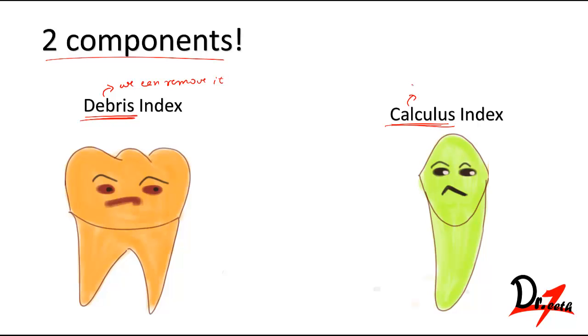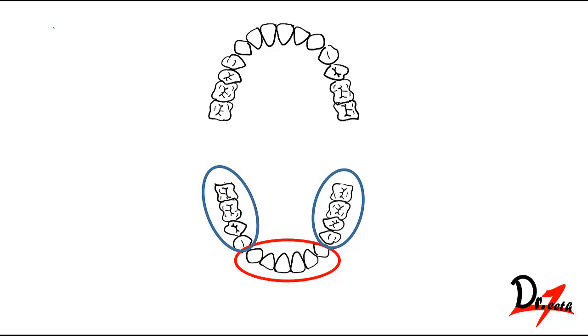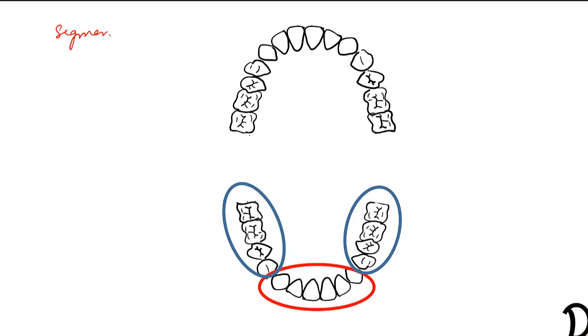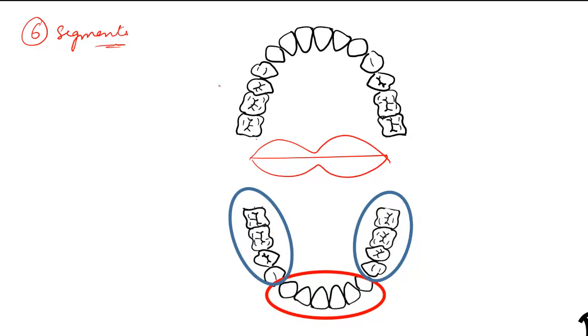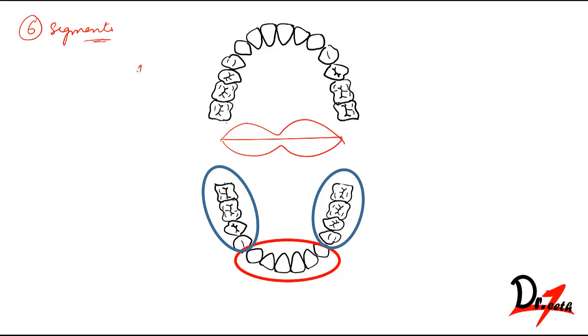What we do is divide the arch into segments - six segments. When you ask the patient to open their mouth, you will see the quadrants: first quadrant, second quadrant, third quadrant, and fourth quadrant.